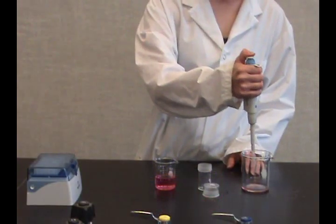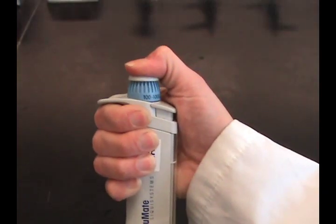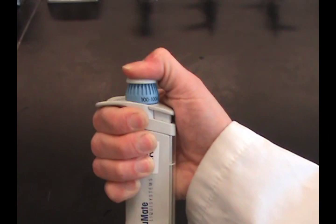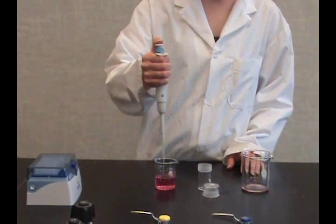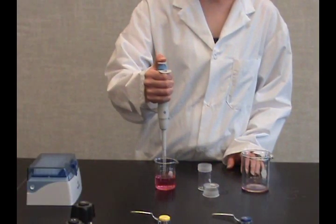Dispense the sample into a waste beaker by depressing the plunger to the first stop and then slowly press it down to the second stop. Withdraw the pipette, keeping the plunger fully depressed.